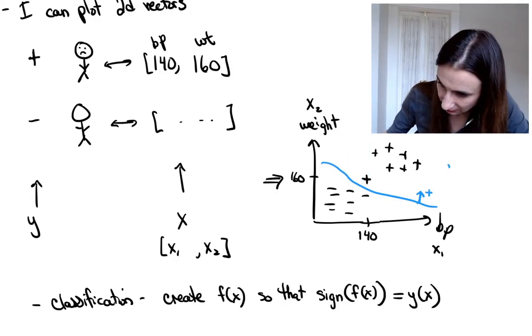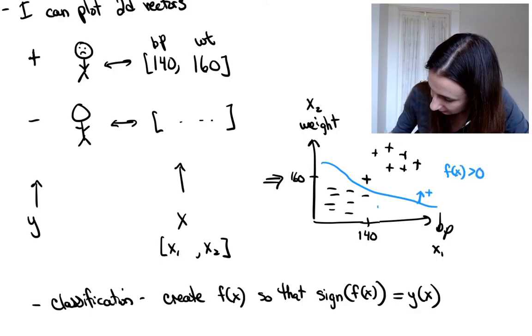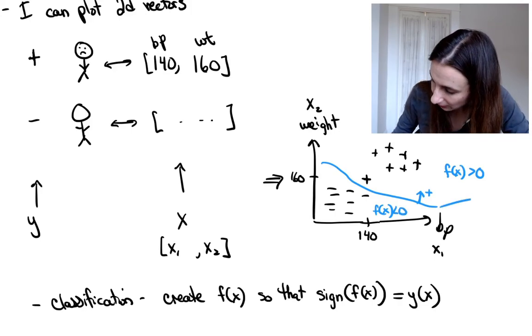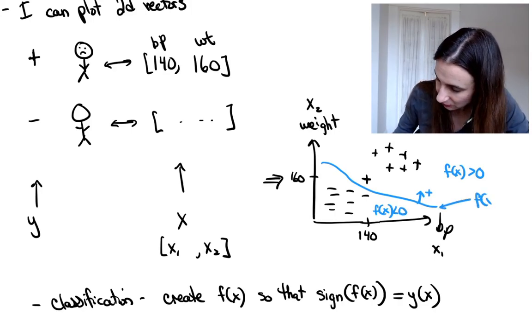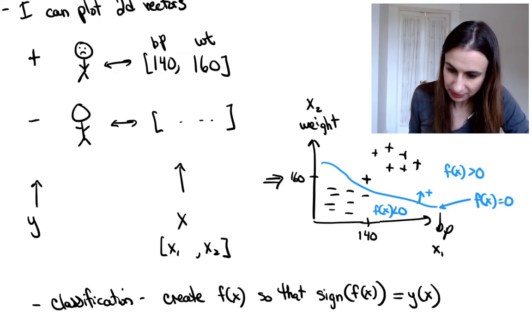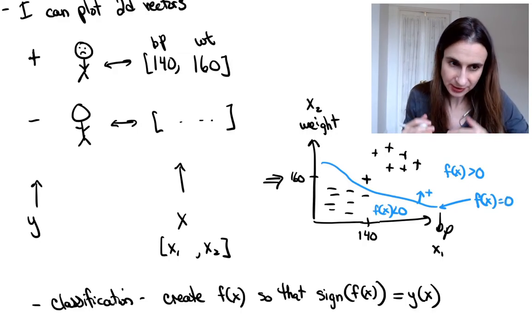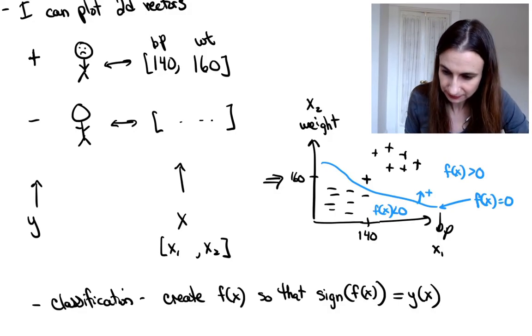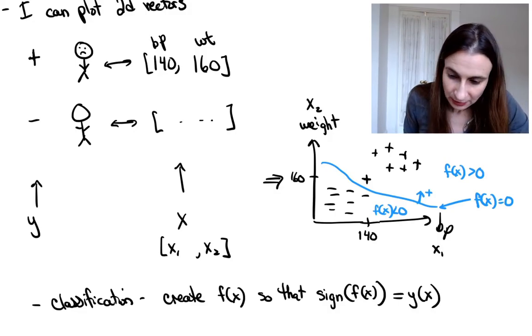And then it's negative on the other side. Okay. So here I'll label f of x greater than zero. And then over here, I'll say f of x less than zero. Okay. So right on the decision boundary, that's where f of x equals zero. And the decision boundary is really important here because that's where the dividing line is between the positive and the negative points.